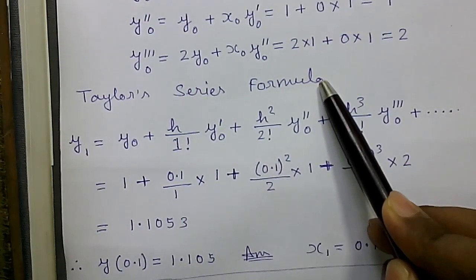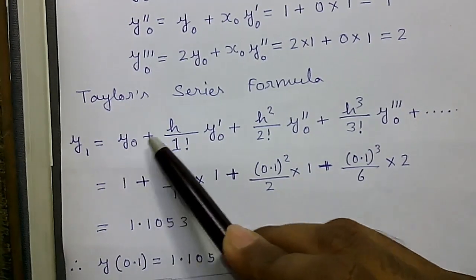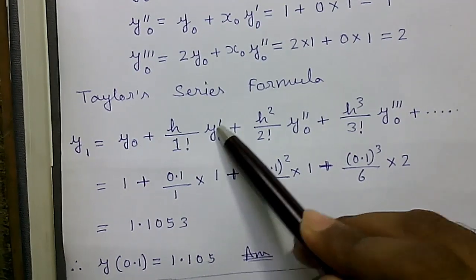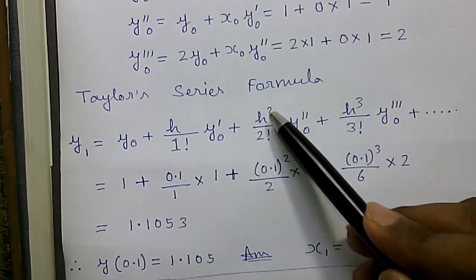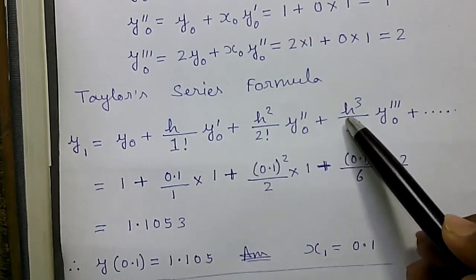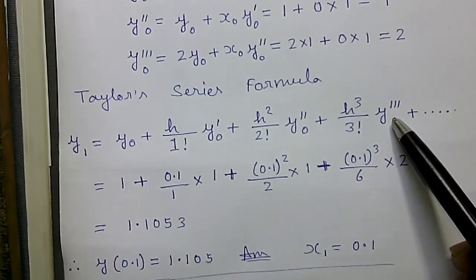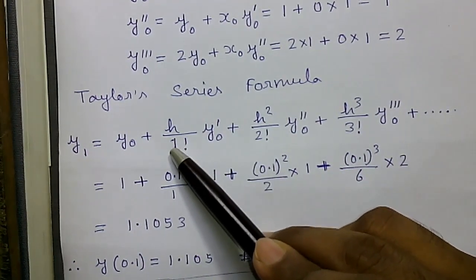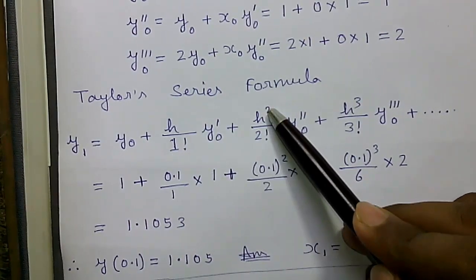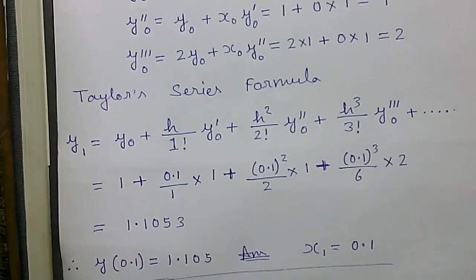Next we will use the Taylor series formula which is y1 = y0 + h/1!·y'0 + h²/2!·y''0 + h³/3!·y'''0. You see the number of dashes is equal to number below or the factorial number. Here power is 2, factorial is 2, and dash is 2. It is very easy to remember.